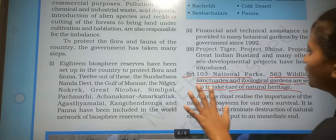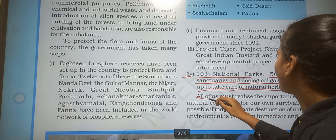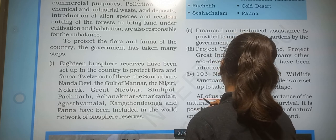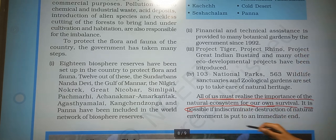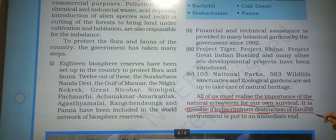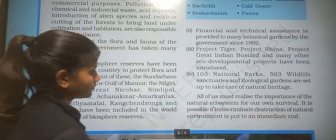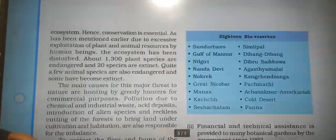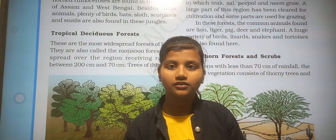These are the steps taken by the government to protect flora and fauna. All of us must appreciate the importance of the natural ecosystem for our own survival, and it is possible only if the destruction of the natural environment is brought to an immediate end. I hope you understood this chapter. That's all for today, thank you, have a nice day.